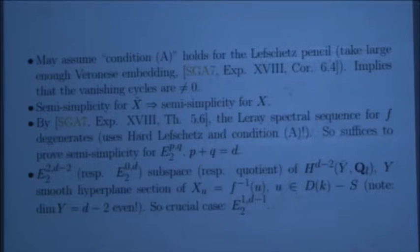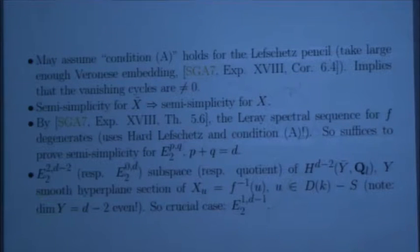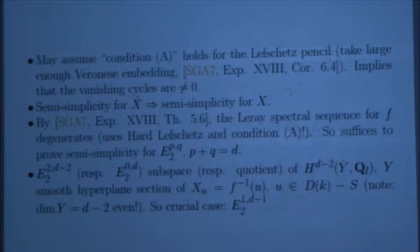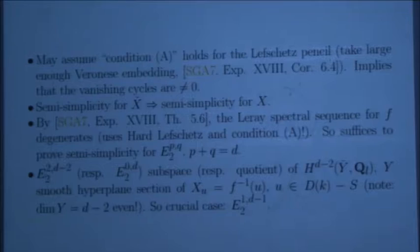On top of that, we can make extra assumptions. An extra assumption, called condition A in SGA 7, which I'm going to explain later — this is a condition which implies that the vanishing cycles are non-zero. It will always hold if you take a large enough Veronese embedding. So let me assume we are in this case.